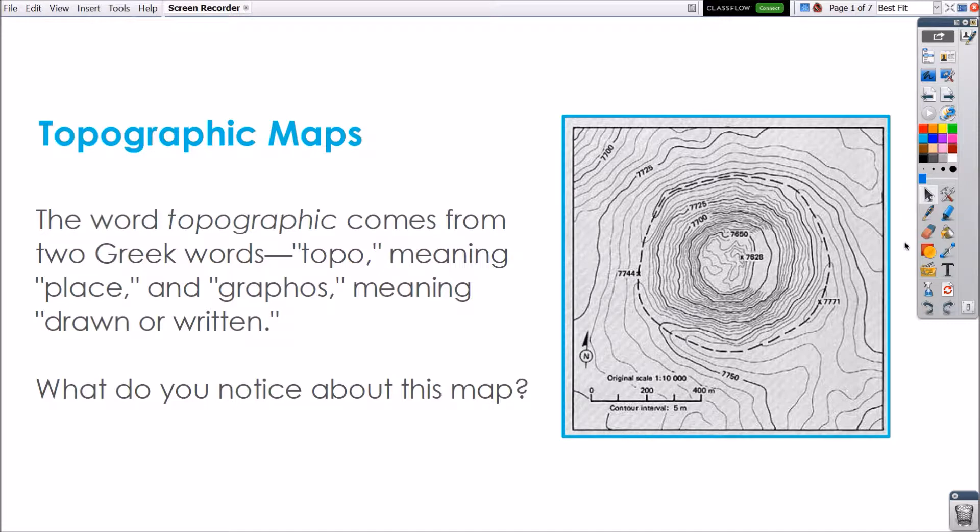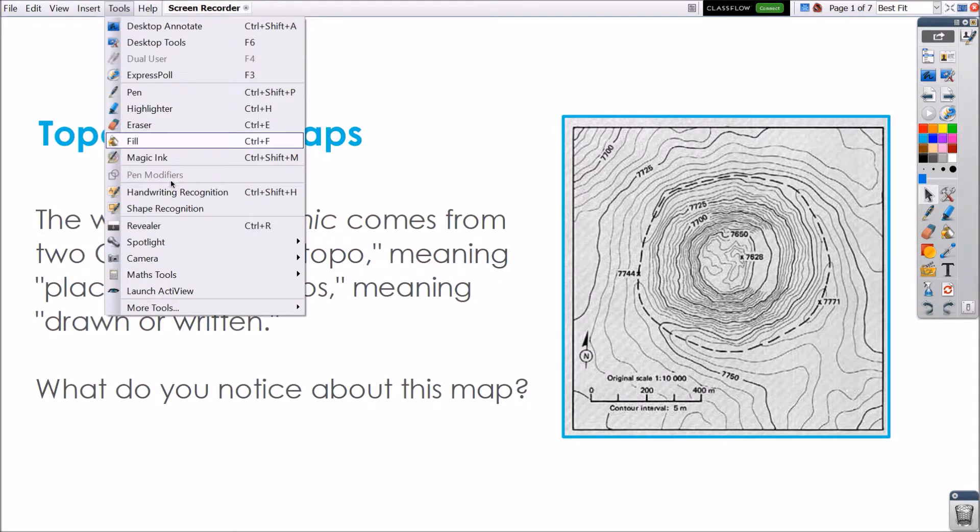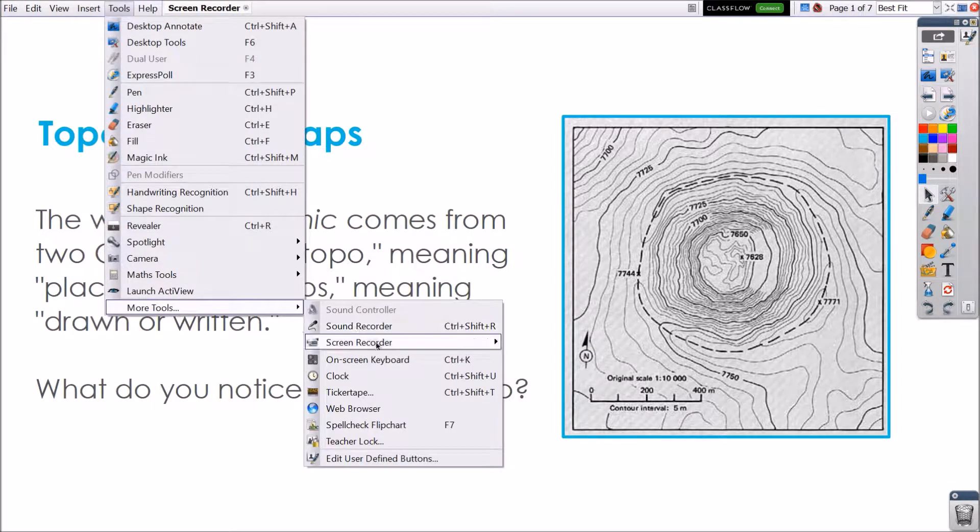To access the Screen Recorder, you can use the Tools icon from your main toolbox or go to Tools, More Tools, and Screen Recorder.